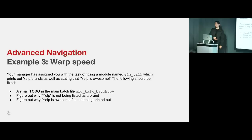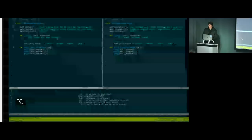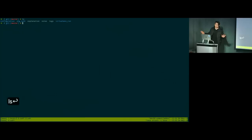Now I'll go through an example where your manager has assigned you with the task of fixing a module named ELG Talk, which prints out Yelp brands and states that Yelp is awesome. The following should be fixed: there's a small to-do in the main batch file, Yelp is not being listed as a brand, and Yelp is awesome is not being printed out. We have a directory with a bunch of files — let's run that batch file. It's printing 'see you on Yelp', 'Yelp is Yelp', and 'these are the Yelp brands' — but not Yelp is awesome, and Yelp isn't listed as a brand.